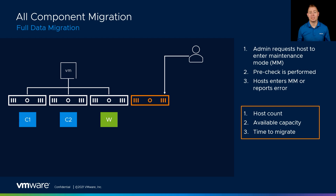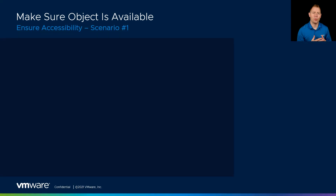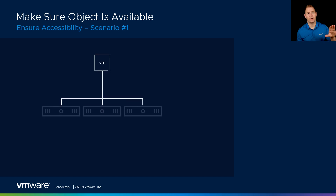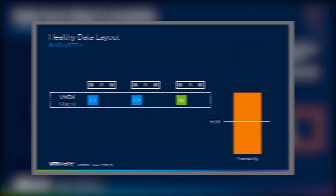Let's talk about our next option, which is ensure accessibility. The ensure accessibility option asks: can we take away this resource and still have access to our objects? In this case, we've got a RAID 1 FTT of 1 VM that can tolerate a single failure — and when we use the word failure, that could be a controller failure, a disk failure, or putting a host in maintenance mode, because we're taking that resource away. And if you think back to our storage policy video, all of our components, for us to have availability, had to be above that 50% watermark.